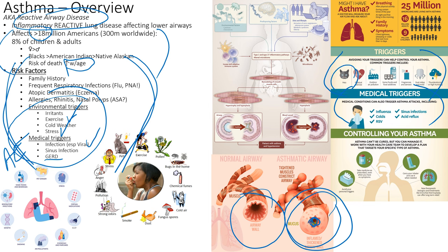Pets are a trigger — tell patients to avoid them. Make sure the cat doesn't go outside bringing triggers in, and don't sleep with the pet. Air pollution is a trigger; poor socioeconomic status increases risk because factories tend to be built in those areas, creating an underserved population that unfortunately gets more asthma.